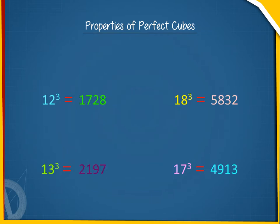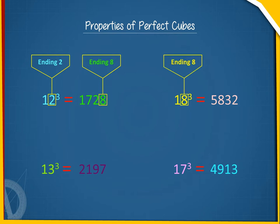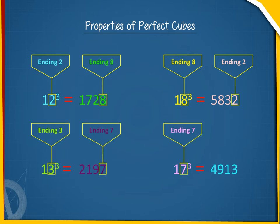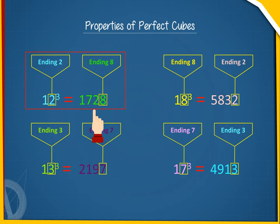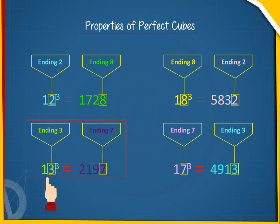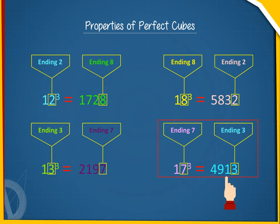Property 5: The cube of a number ending with 2 ends with 8, and the cube of a number ending with 8 ends with 2. Similarly, the cube of a number ending with 3 ends with 7, and the cube of a number ending with 7 ends with 3. For example, 12³ = 1728, 18³ = 5832, 13³ = 2197, 17³ = 4913.